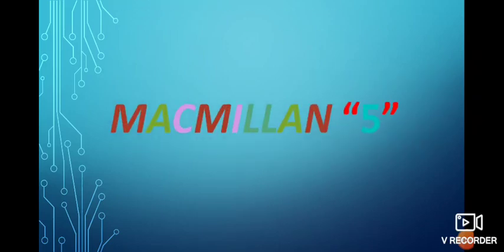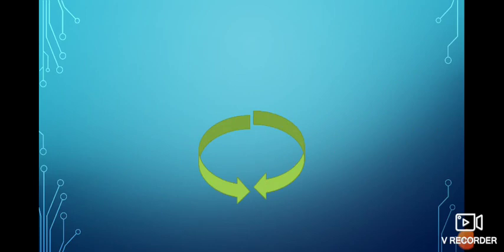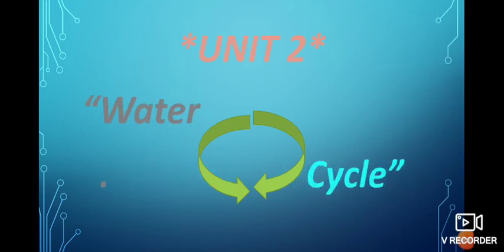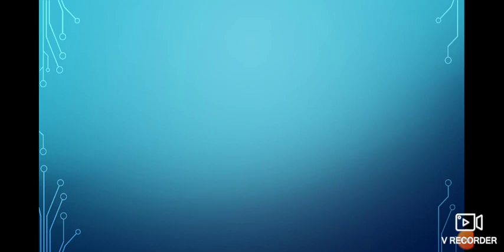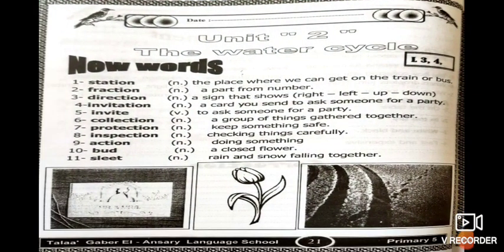Good morning, Primary Five! We are going to continue and complete Unit 2, which is called the Water Cycle. Today is our second lesson. Our phonics today: we bring verbs and add '-ion' at the end to change them into nouns — to make a noun from a verb by adding '-ion'.